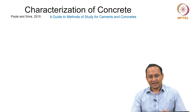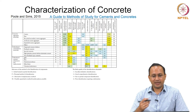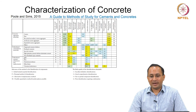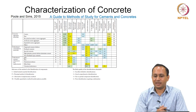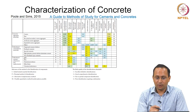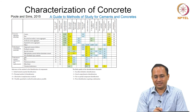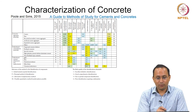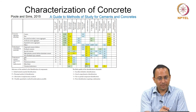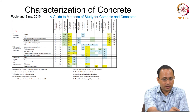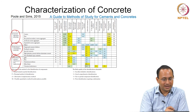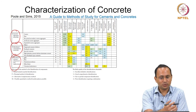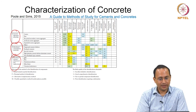As far as characterization of concrete is concerned, there is a guide to methods of study for cements and concretes — what kind of methods can be used and what are the limitations. In this table, we have concrete aggregates, unhydrated cement, admixtures and replacements in the first column. If you want to study these materials, aggregates can be coarse, fine, recycled, or artificial.